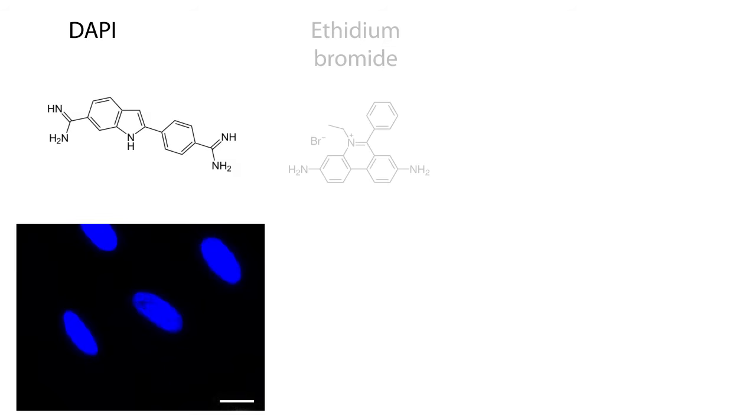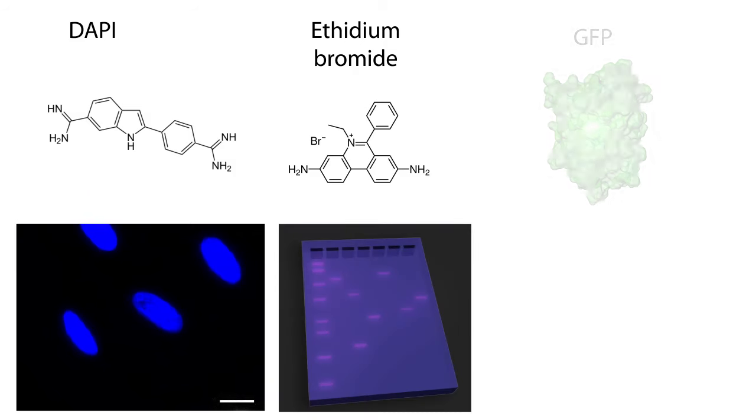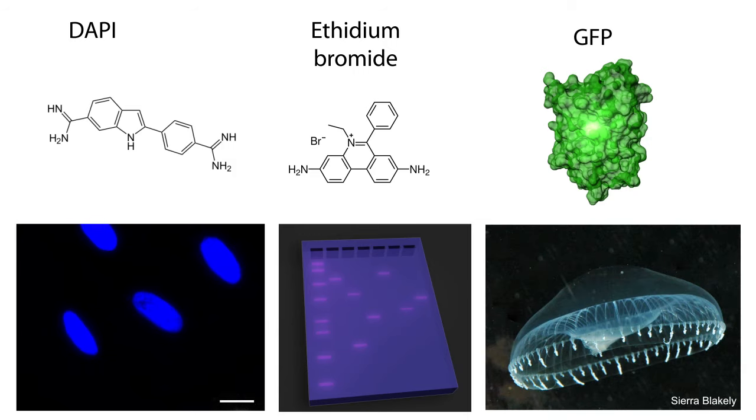Some examples of fluorescent molecules are DAPI, used to detect DNA; ethidium bromide, used to intercalate DNA in agarose gels; and green fluorescent protein, a naturally occurring fluorescent protein found in jellyfish.